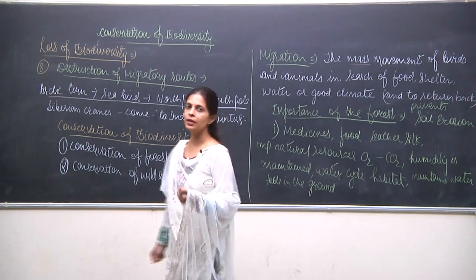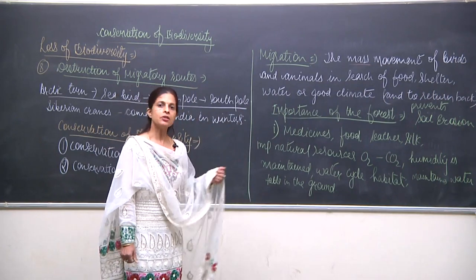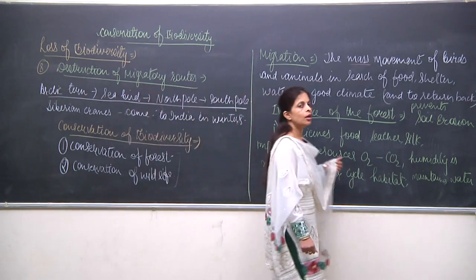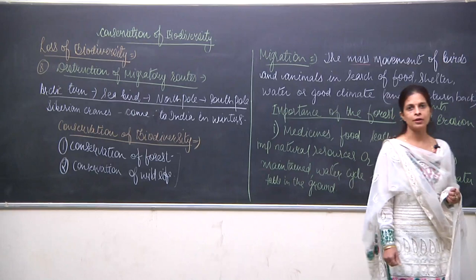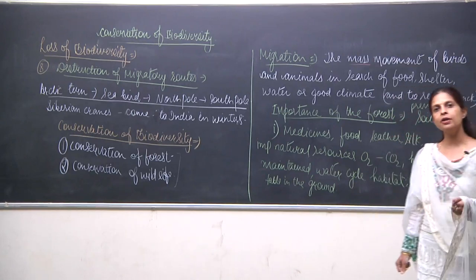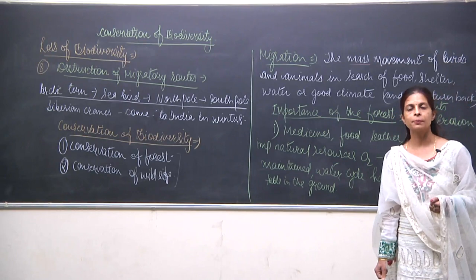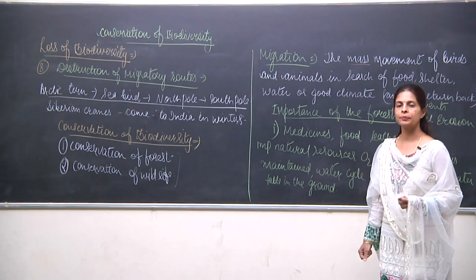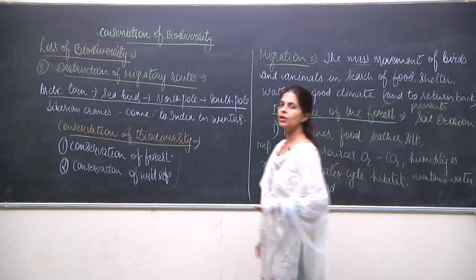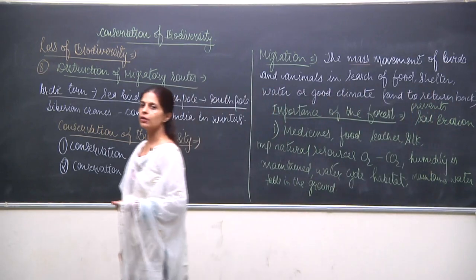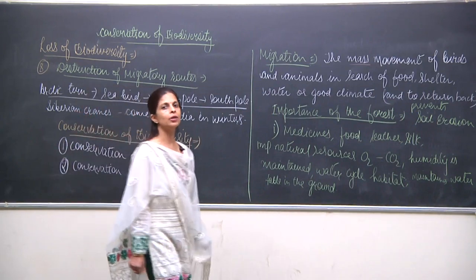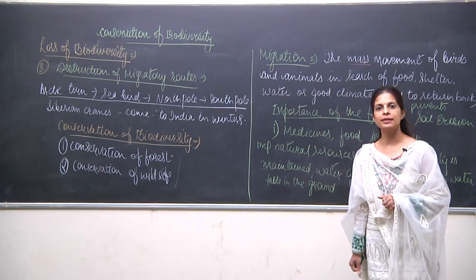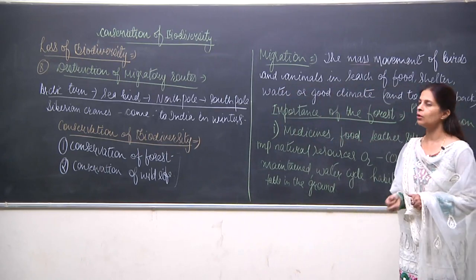These reasons explain why we need to take care of and conserve the forest. The most important roles are maintaining the water cycle and the oxygen-carbon dioxide balance — without oxygen we cannot survive. Forests are very useful for us and now we will discuss how to conserve the forest and the different ways to conserve it.